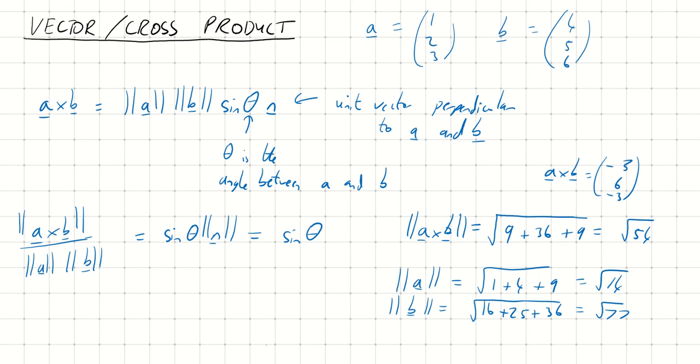So going back to our formula, this left-hand side is the same as the square root of 54 over the square root of 14 times the square root of 77. And that is equal to, if you work that out, that's 0.2238.